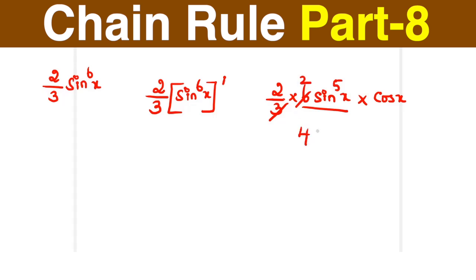2 twos are 4. So 4sin⁵x cos x. Slowly get over the usage of bringing the third variable so that you do it as a simple part of mental calculation.